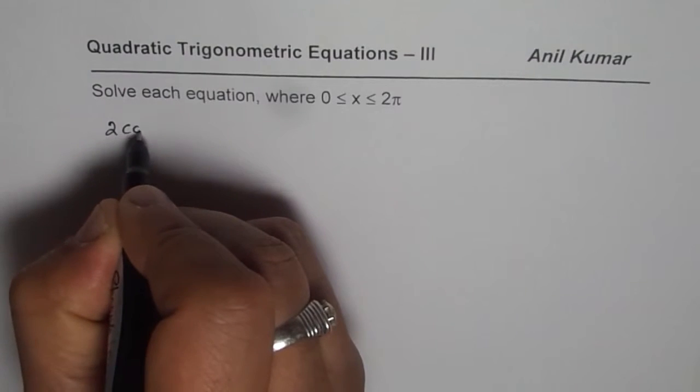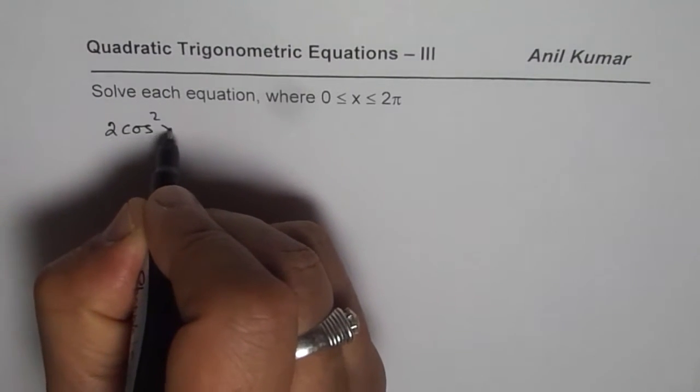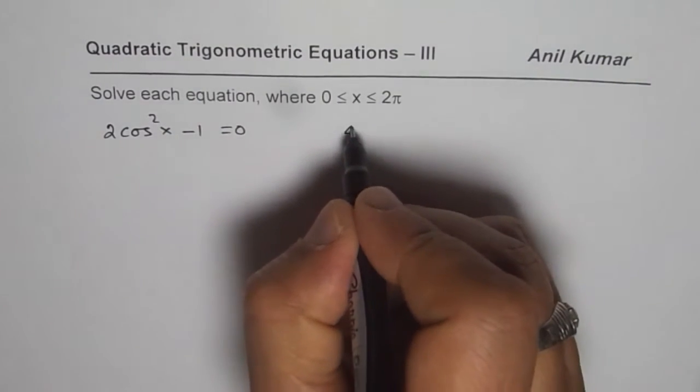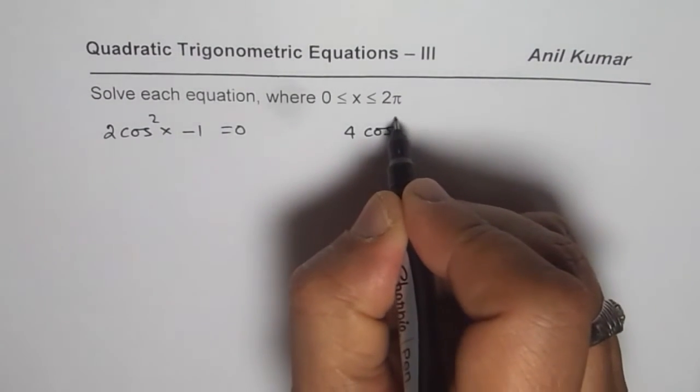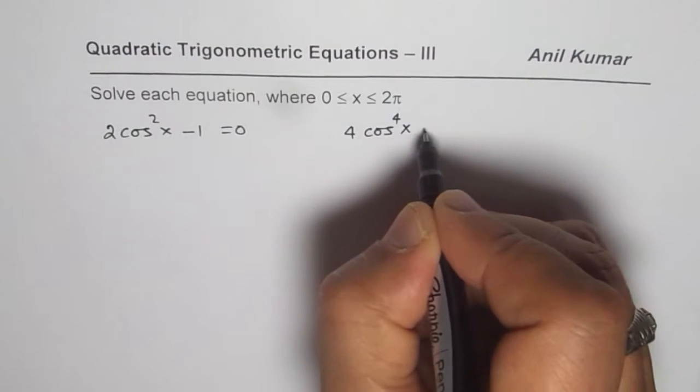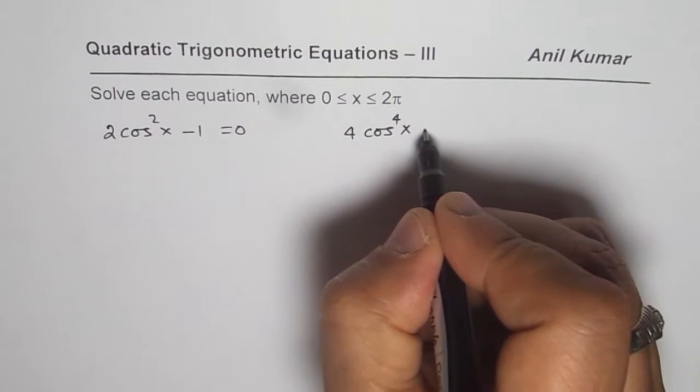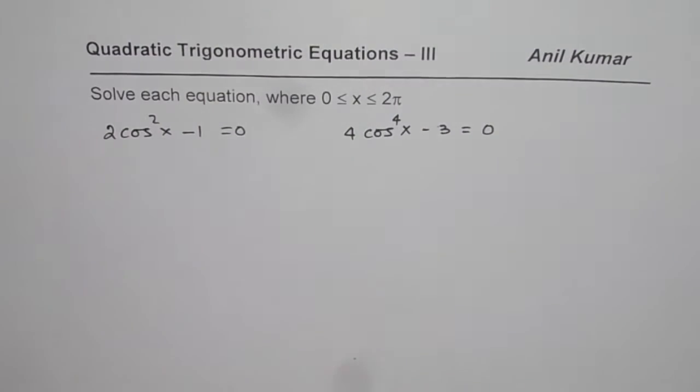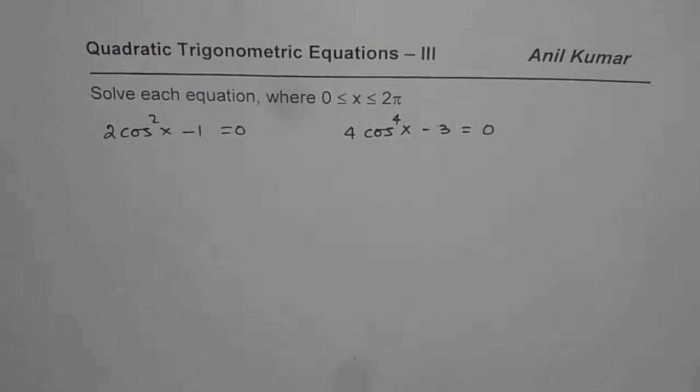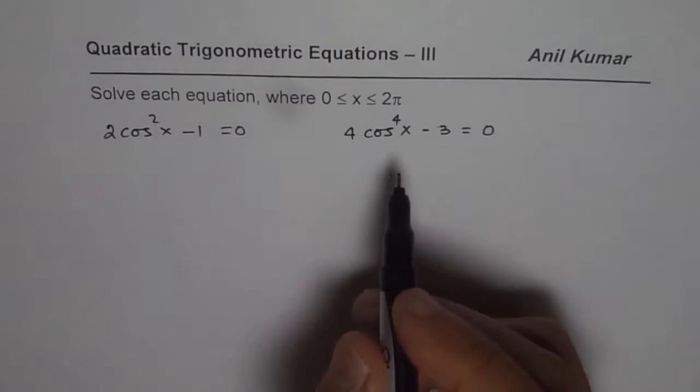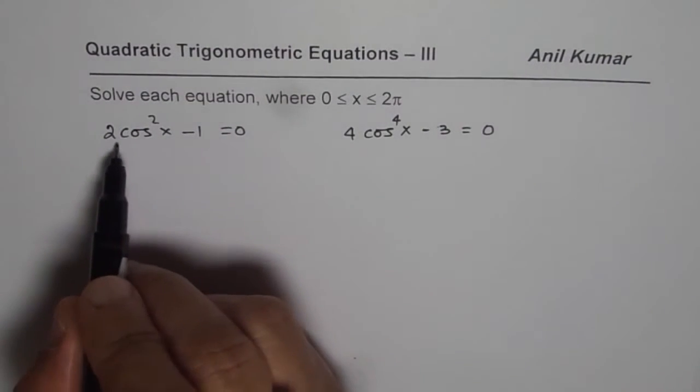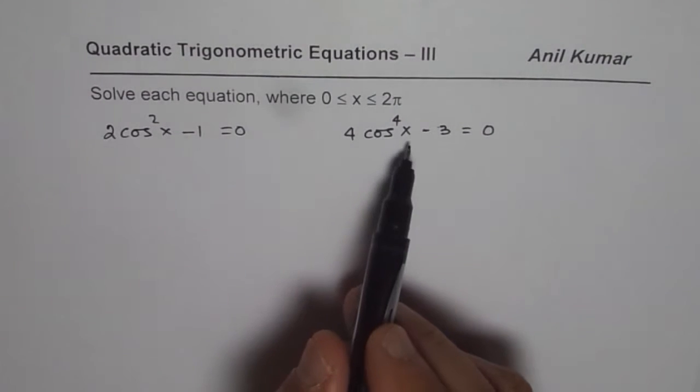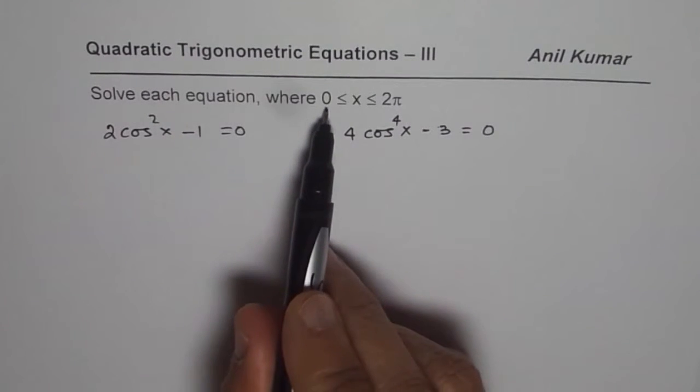Let me take examples like 2cos²x - 1 = 0 and then we can work on 4cos⁴x - 3 = 0. We have taken both cosine functions and we will take up sine function also once we solve them. So let us solve these equations and find all the solutions which they satisfy within the domain 0 to 2π.